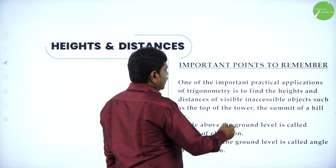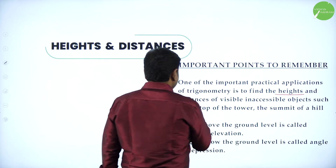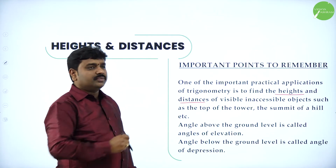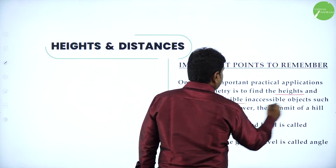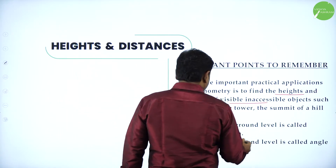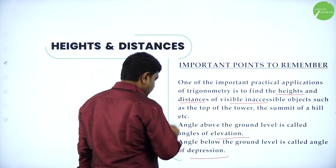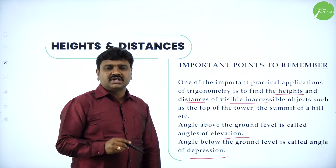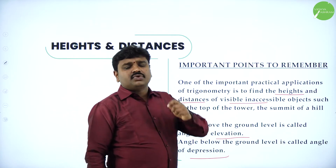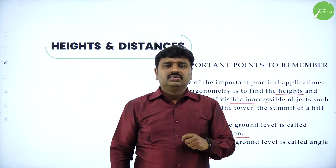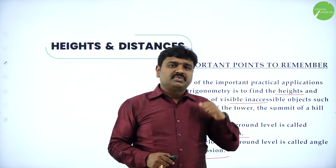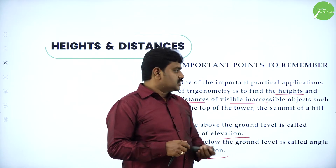One important practical application in trigonometry is to find heights and distances. That is why this is an important application of trigonometry. Whatever you studied in first year PUC — trigonometric functions — now we will apply them to measure the heights as well as distances of visible inaccessible objects. They are visible but they are inaccessible. Angle above the ground level is called elevation; angle below the ground level is called angle of depression. Inaccessible objects' distance and height can be measured — I told you when a ship is coming in the sea from a lighthouse, you can approximate its distance using heights and distances. If you know the angle, you can measure.